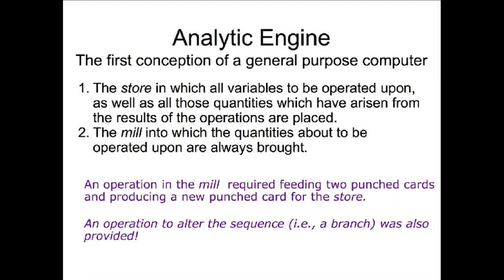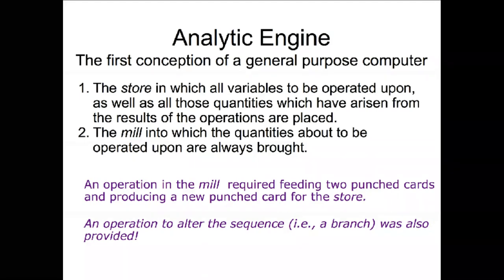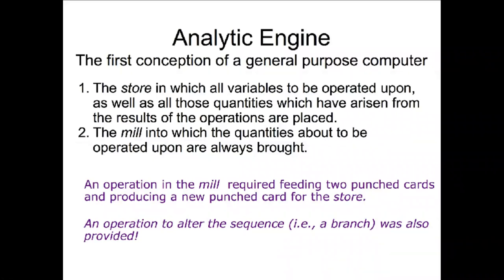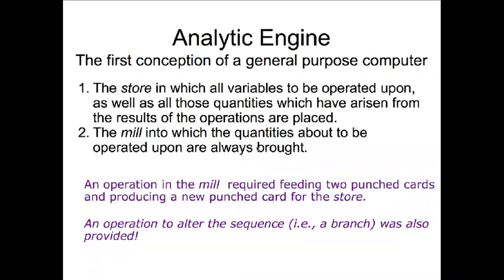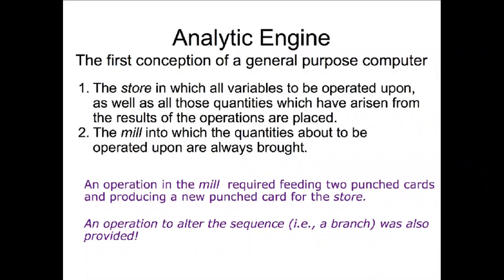So he actually designed an analytic engine. It has a lot of the same concepts — it had a store, which is kind of like memory in today's systems, and then it had a mill, which is kind of like your CPU. And it was programmed with punch cards. This thing would be considered Turing-complete — it did have branches and stuff like that — so it would have been Turing-complete if it were actually made. Problem is that he died and never developed his machine.